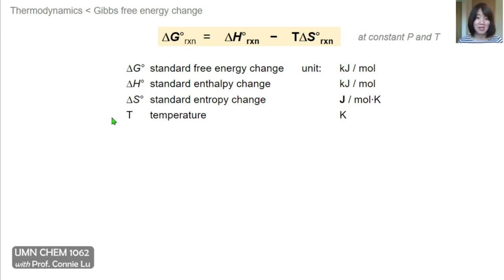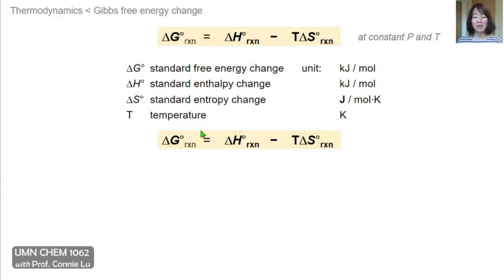One thing to be careful about is that delta S is reported in joules per mole per Kelvin, so you'll need to convert between joules and kilojoules to use this equation properly. Temperature is used in Kelvin. We can use this equation to quantitatively determine delta G if we know delta H, the temperature, and delta S — or by first calculating delta H and delta S from heats of formation and standard molar entropies, and then plugging them in to find delta G.